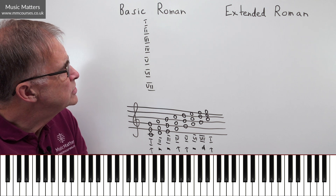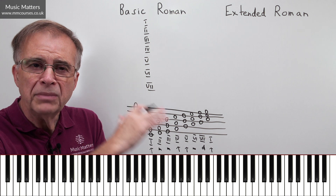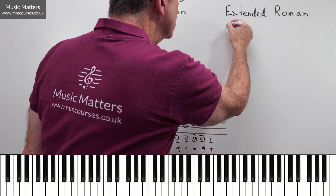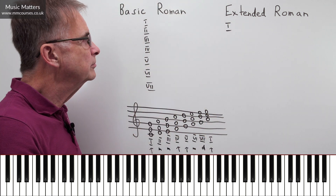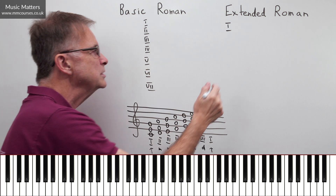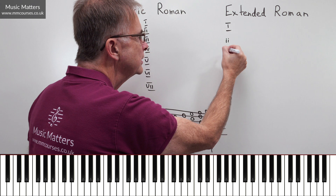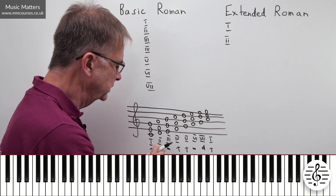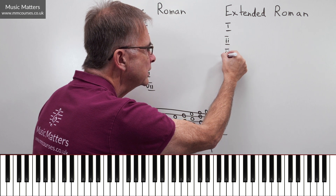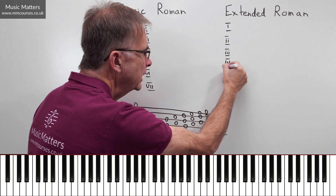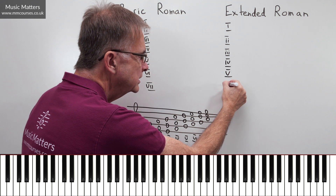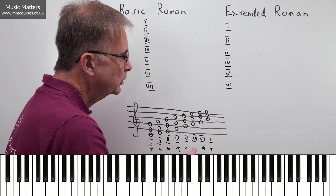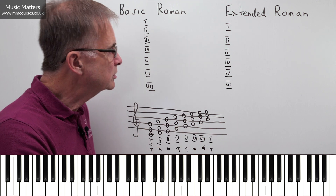So when we're putting this into extended Roman, what we do is we put the major chords in uppercase and we put the minor chords in lowercase. So chord I in a major key is going to be in uppercase because it's major. Chord II is minor, so it's done in lowercase. Chord III is minor — lowercase again. IV is major, V is major. VI is minor — lowercase. Now VII is diminished, so that needs slightly different treatment if you want to flag up that it's diminished.